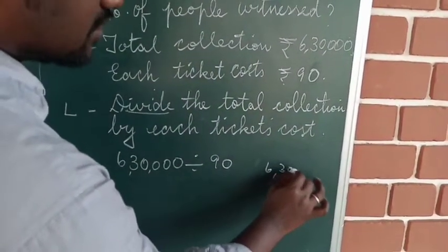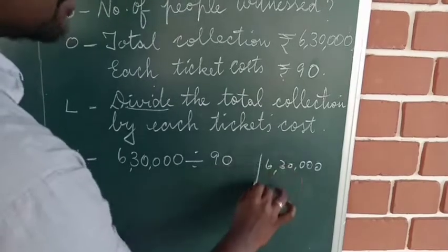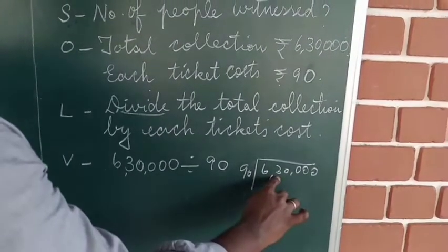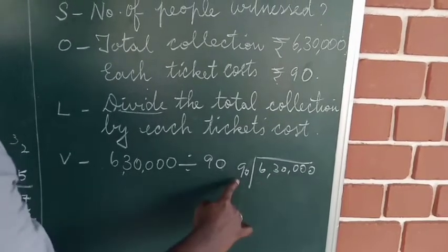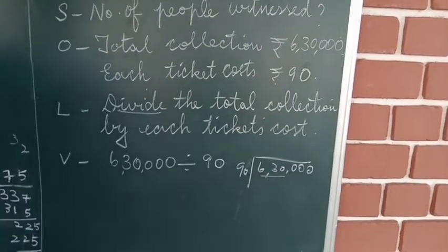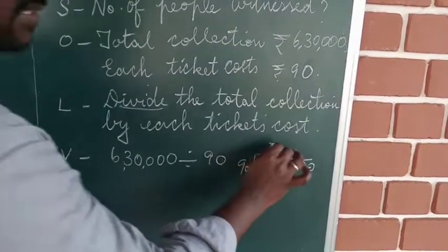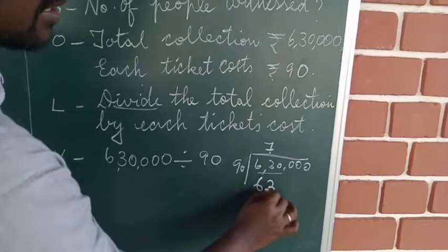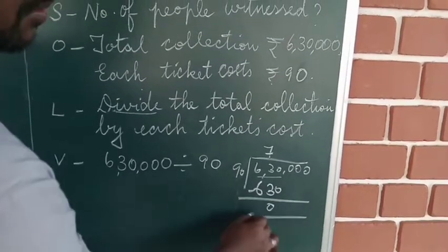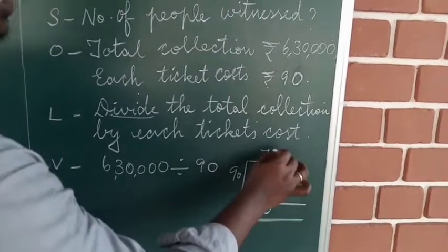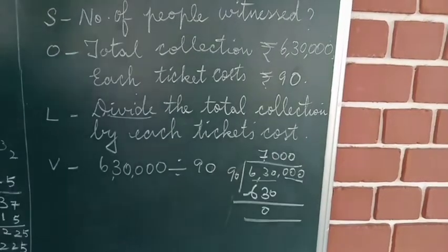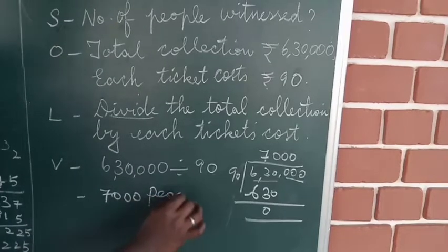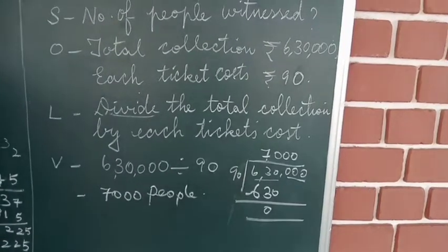6,30,000 divided by 90. Taking 3 digits first: in 630, how many 90s are there? There are 7. Seven 90s are 630. Subtract — remainder is 0. Take all the remaining three zeros down. So the answer is 7,000. Seven thousand people went to see the match.